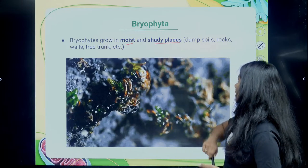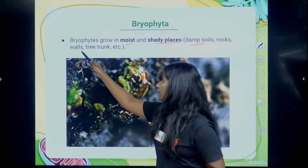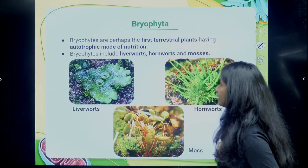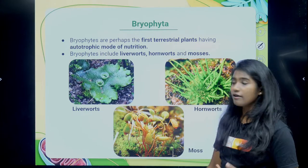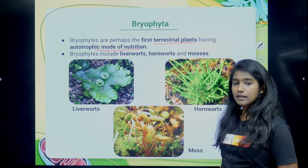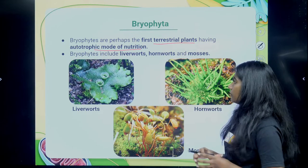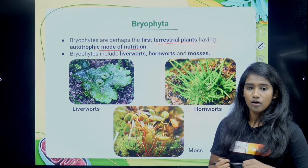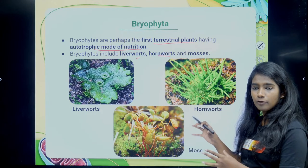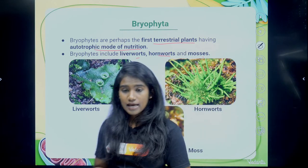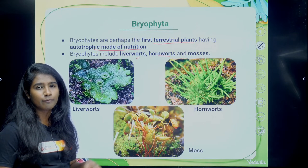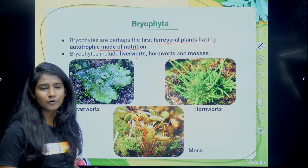Bryophytes grow in moist and shady places like damp soil, rocks, near wells, and tree trunks. They are considered the first terrestrial plants having autotrophic mode of nutrition. Examples of bryophyta include liverworts, hornworts, and mosses. They are dependent on water for reproduction, which is another reason they are called amphibians of the plant kingdom.